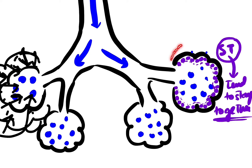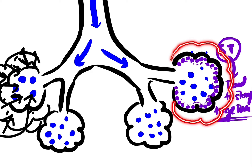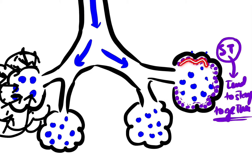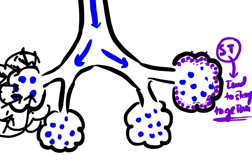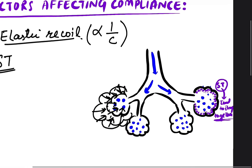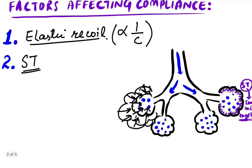During distension of the alveoli, this surface tension can break — the water molecules get separated. So the water molecules tend to keep the alveoli in the same position, opposing distension. Surface tension therefore has an inverse relationship with compliance. Both elastic recoil and surface tension oppose compliance.